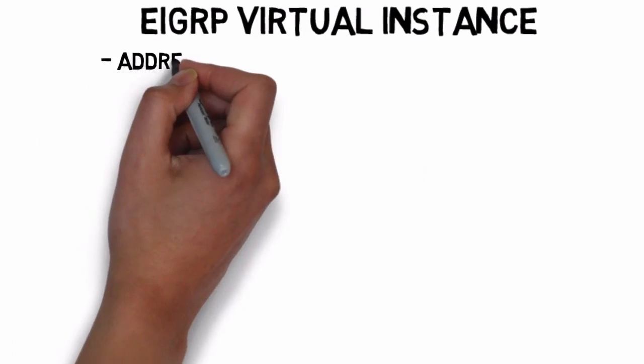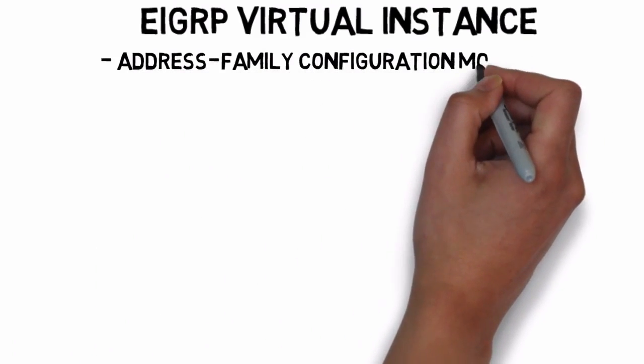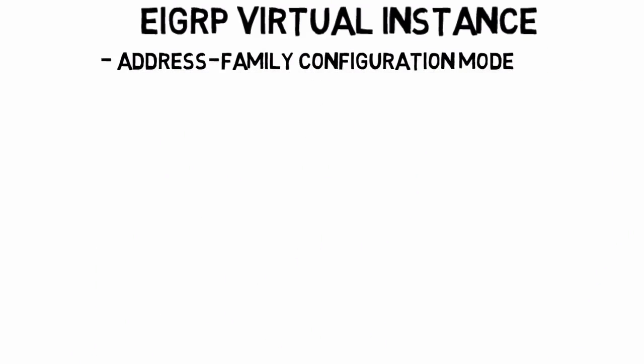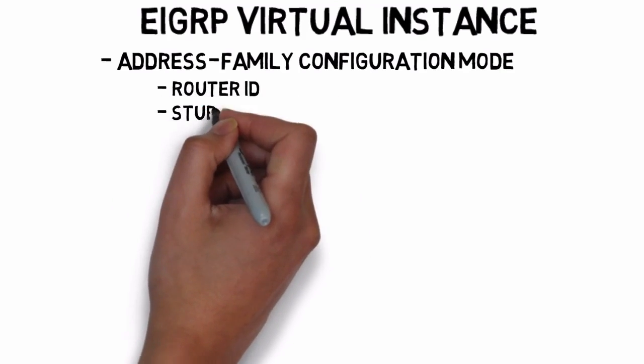In this hierarchy, we can define address families and go into address family configuration mode. We might, for example, have an address family for IPv4, maybe another address family for IPv6. It's under address family configuration mode where we set up the general EIGRP configuration commands, such as setting the router ID or designating a router as an EIGRP stub router.